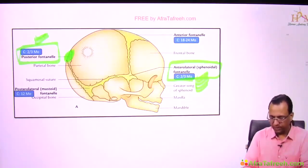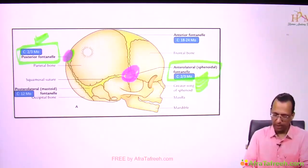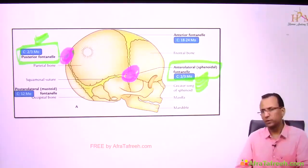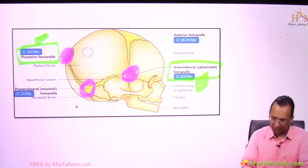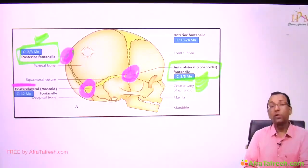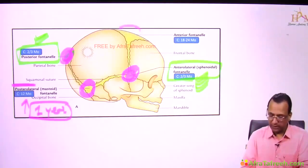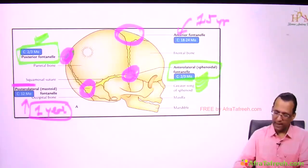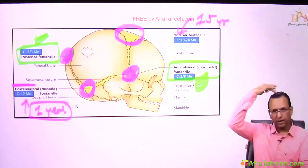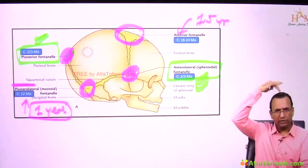Both the sphenoidal and posterior fontanels close at the same time — two to three months post birth. The next to fuse is the mastoid fontanel, which is posterolateral, closing at around one year. The last to fuse is the anterior fontanel, which closes at one and a half to two years. You can place your hand at the anterior fontanel to check CSF pressure — for example, in a case of hydrocephalus — until one and a half to two years of age.